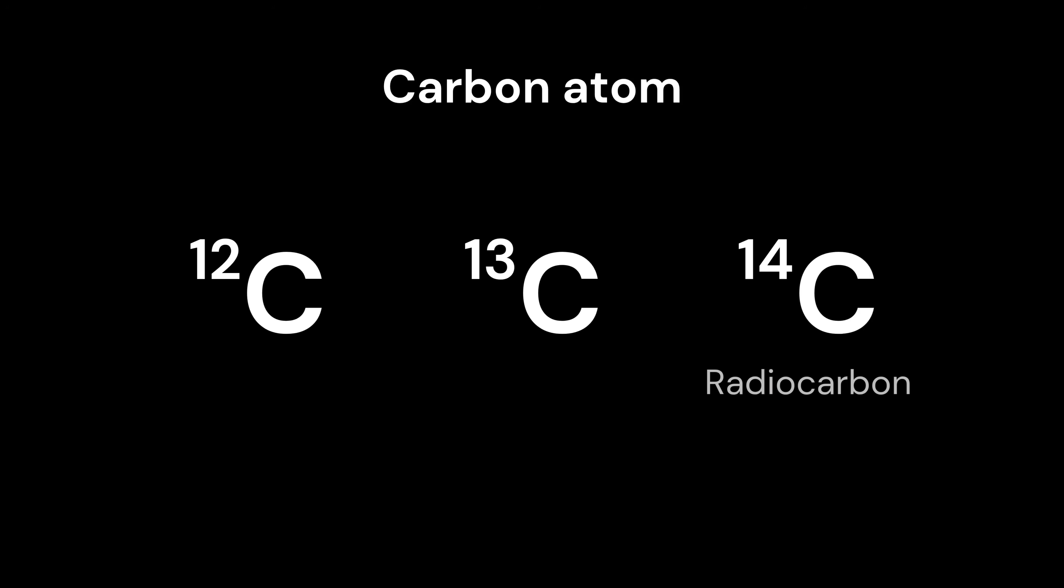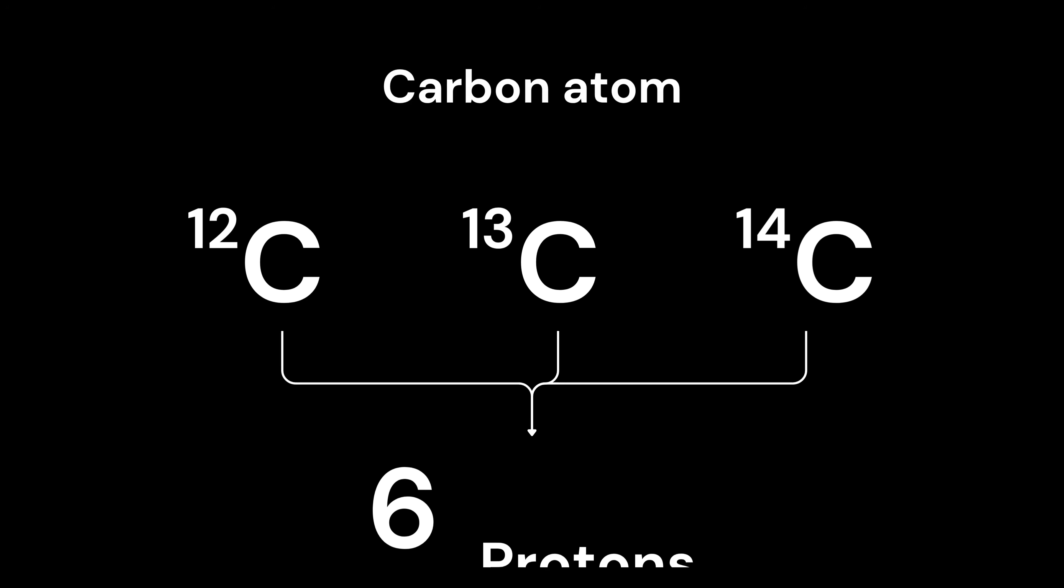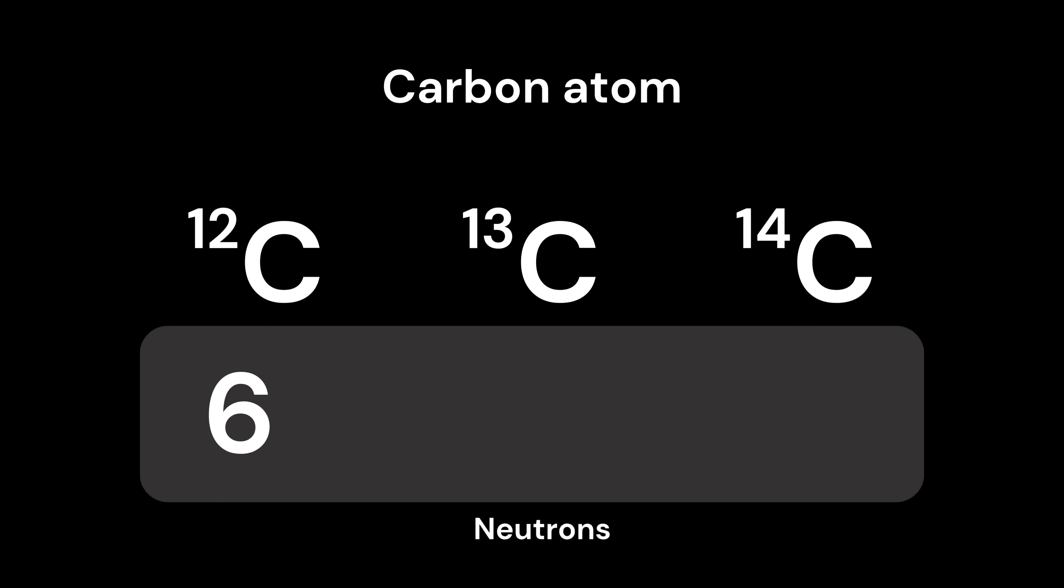They all have a total of six protons. The difference between the various carbon atoms lies in their number of neutrons. C12 has six, C13 has seven, and C14 has eight. In addition, C14 decays radioactively.